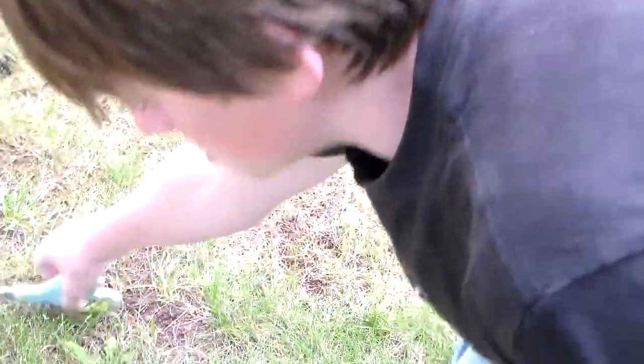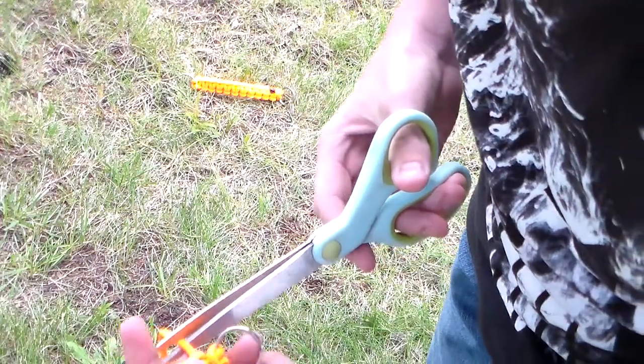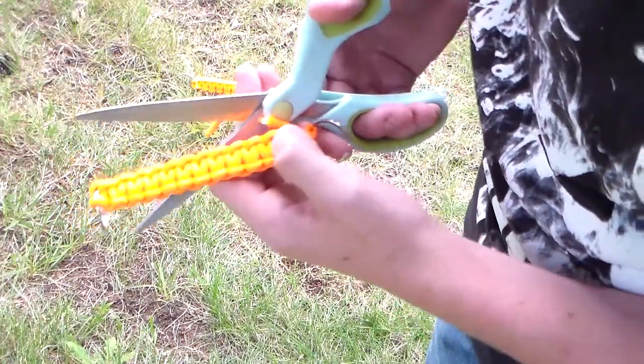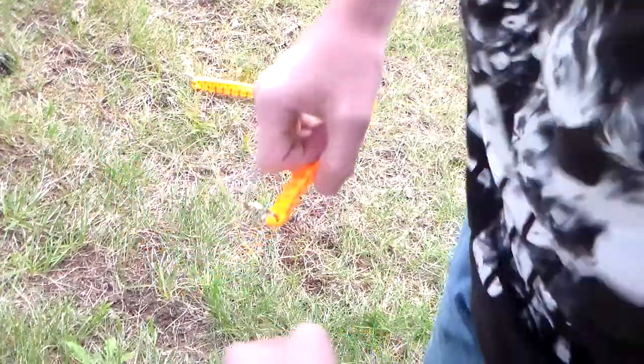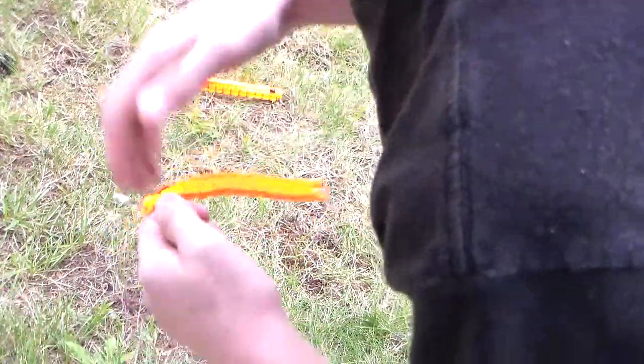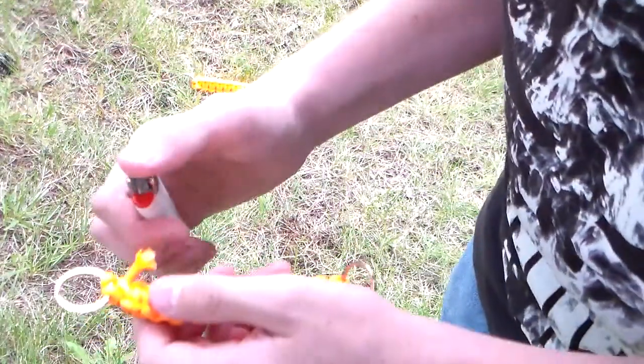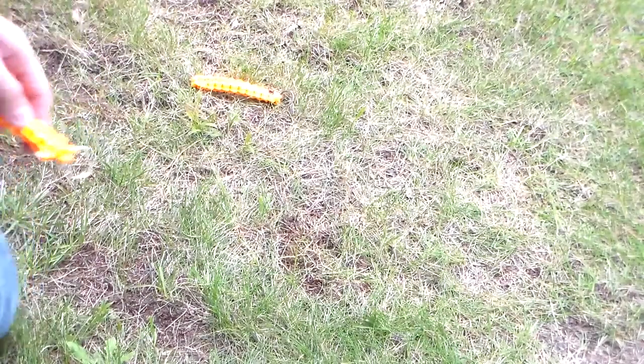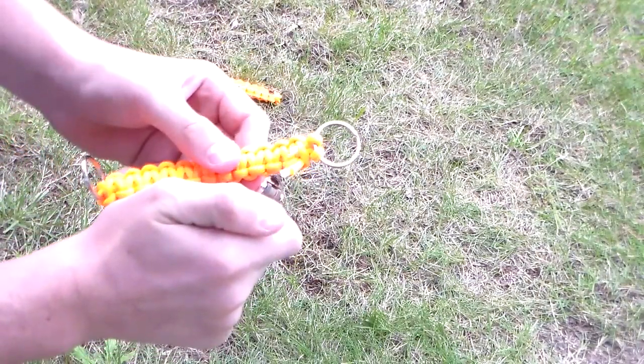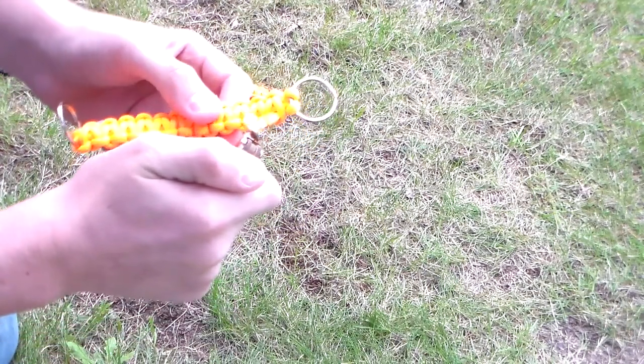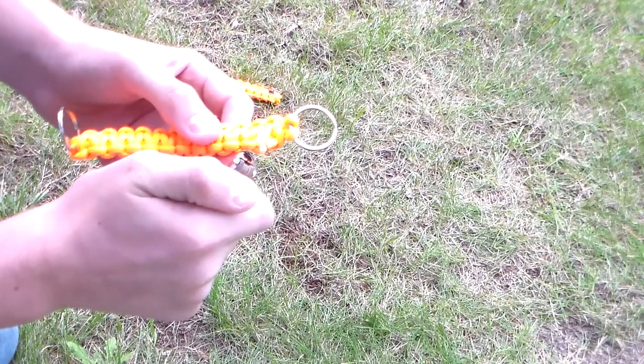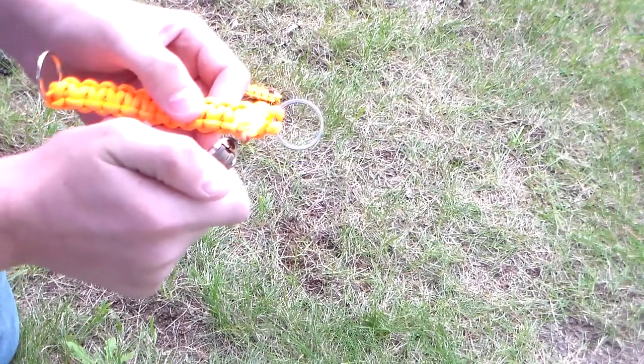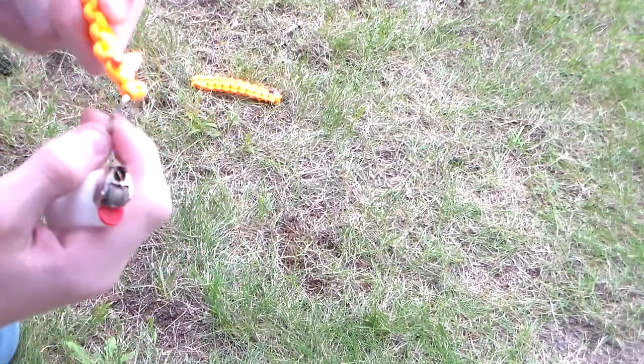So now you're going to take your scissors again and you'll cut about a half inch from the keychain itself. Now you'll take your lighter again and melt your paracord here. Let me move to the other side so I can try to block the wind as best as I can. Alright.